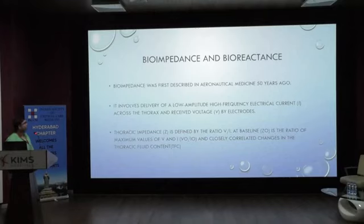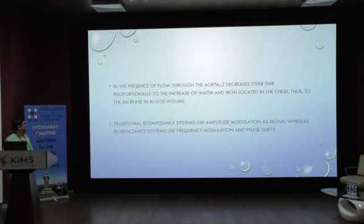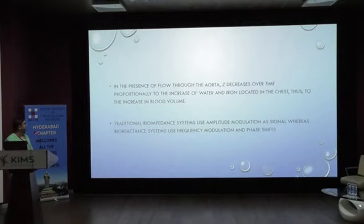Bioimpedance was first described in aeronautical medicine almost 50 years ago. It involves delivery of a low amplitude, high frequency electric current across the thorax and measurement of received voltage by electrodes. Impedance is defined as the ratio of voltage to current. The baseline ratio is related to changes in thoracic content — in the presence of flow through the aorta, this impedance value changes over time proportional to increases in water and blood volume in the chest.